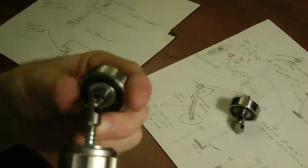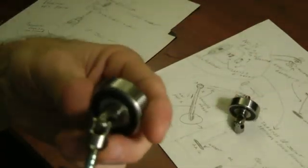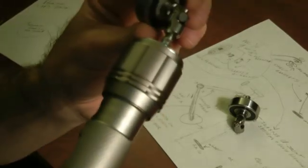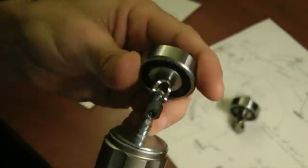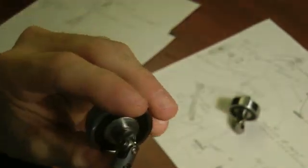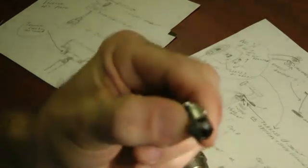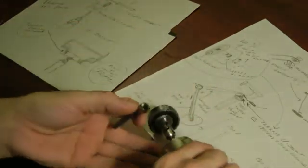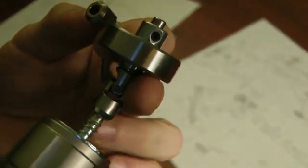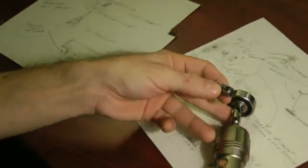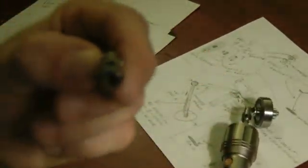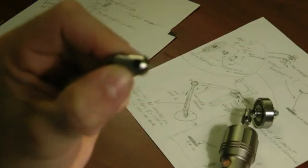We then just took a 5-16 wood lag bolt, drilled a pilot hole in the wooden dowel. 5-16 lag bolt, cut off the head of it, put a grinder to it and tapered it down to where it would fit in the 5 millimeter hole here. And then we ground a flat spot on the lag bolt. Once we tapered it down, ground a flat spot on it to catch so the set screw would catch onto it.